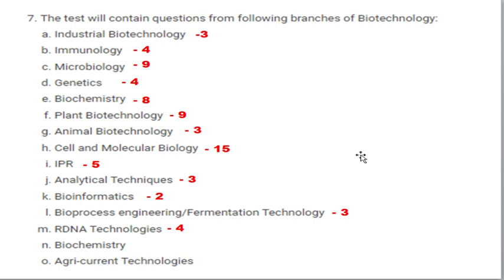For example, from industrial biotechnology they have asked questions about industrially important microorganisms — like which microorganism is responsible for producing citric acid. This time they asked which organism is responsible for producing dextrin at industrial scale. From immunology, two questions were asked about vaccines for coronavirus, and one question was asked from hybridoma technology.